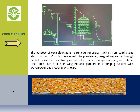Corn cleaning. The first part of a corn starch production system is corn cleaning. The purpose of corn cleaning is to remove impurities such as iron, sand, stone, etc. from corn. Corn is transferred into a pre-cleaner and magnet separator through bucket elevators respectively, in order to remove foreign materials and obtain clean corn.